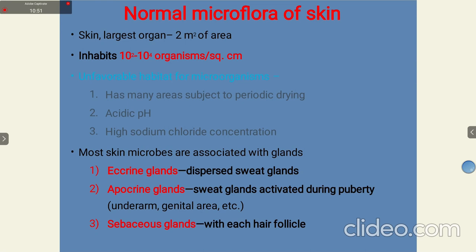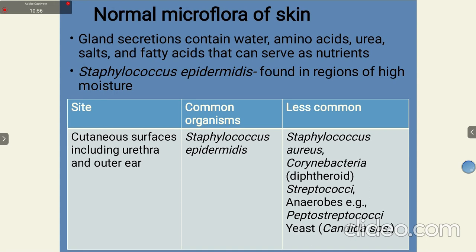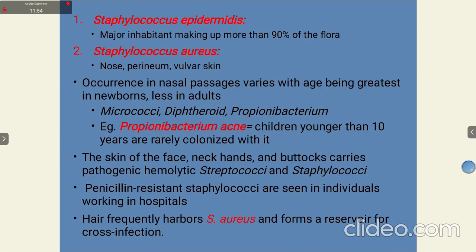Gland secretions contain water, amino acids, urea, salts, and fatty acids that serve as nutrients. Staphylococcus epidermidis, which means 'upon the skin,' is found in regions of high moisture. On cutaneous surfaces including the urethra and outer ear, Staphylococcus epidermidis is most commonly present, along with small amounts of Staphylococcus aureus, Corynebacteria or diphtheroids, streptococci, and yeast such as Candida. Staphylococcus epidermidis is one of the major inhabitants making up more than 90% of the skin flora.